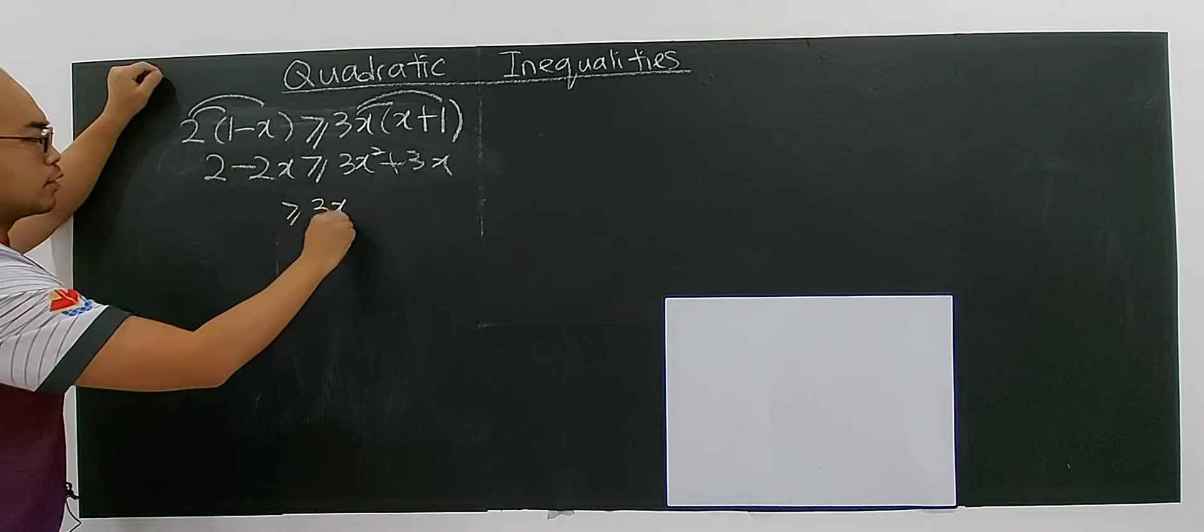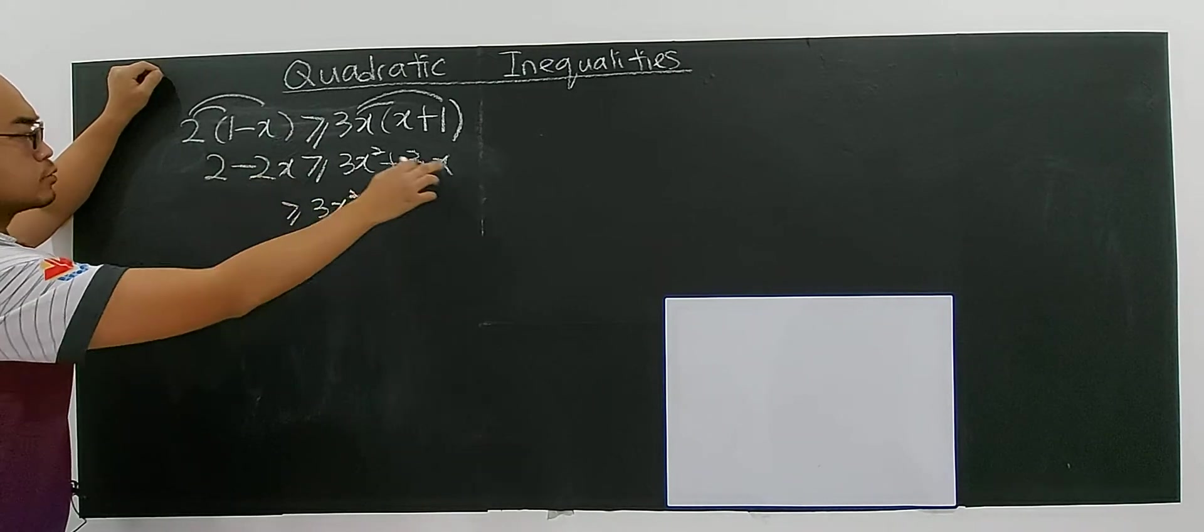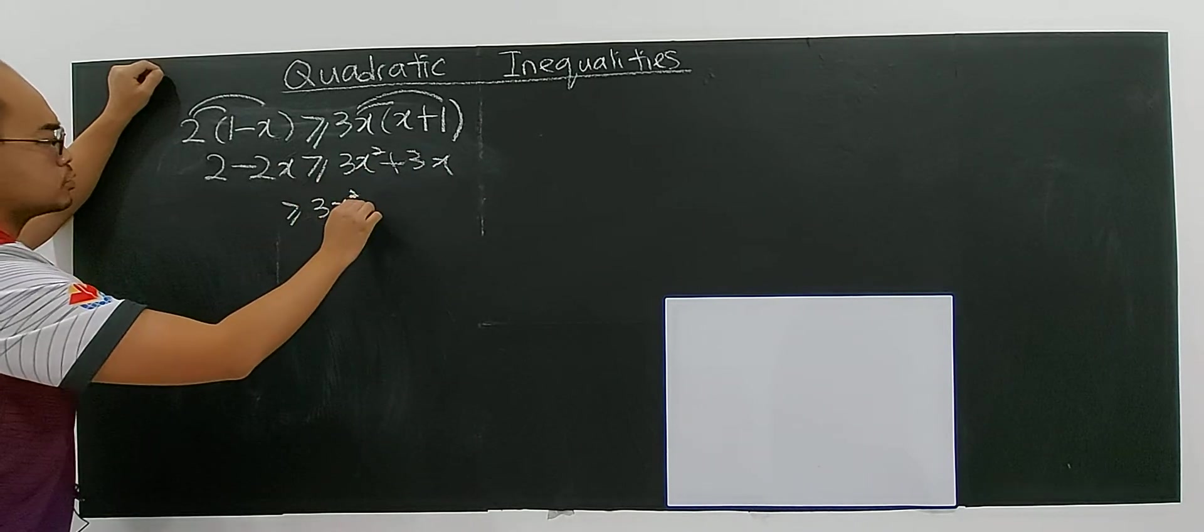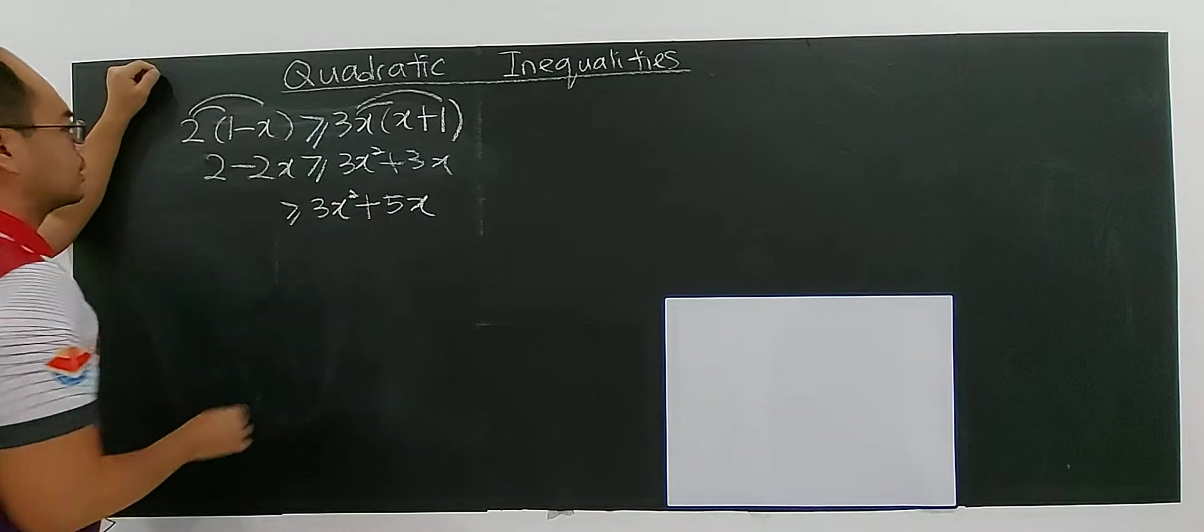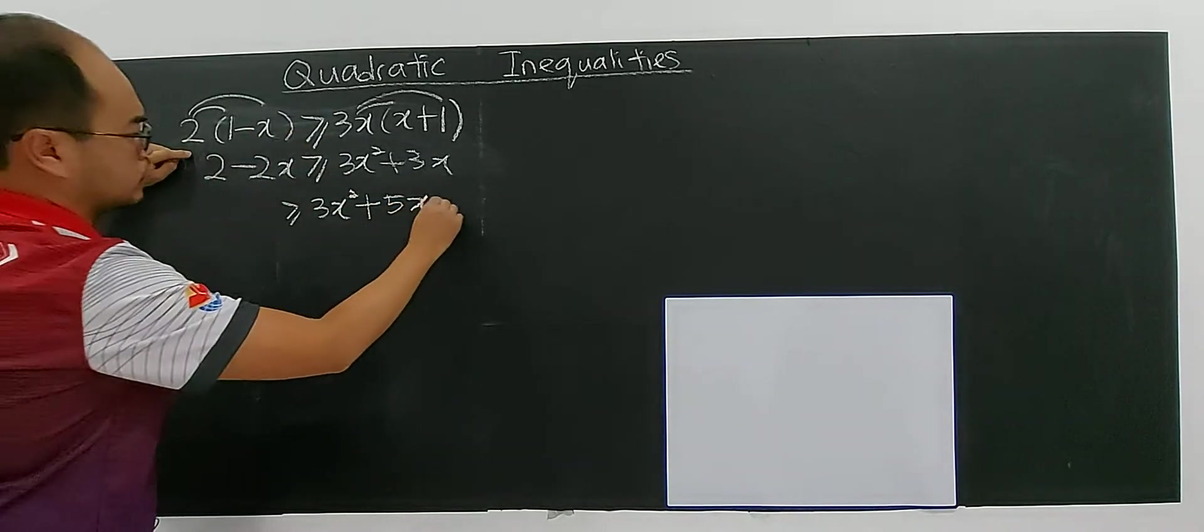3x to the power of 2 plus 2x plus 2x. So 3x plus 2x, you have 5x. And negative 2.